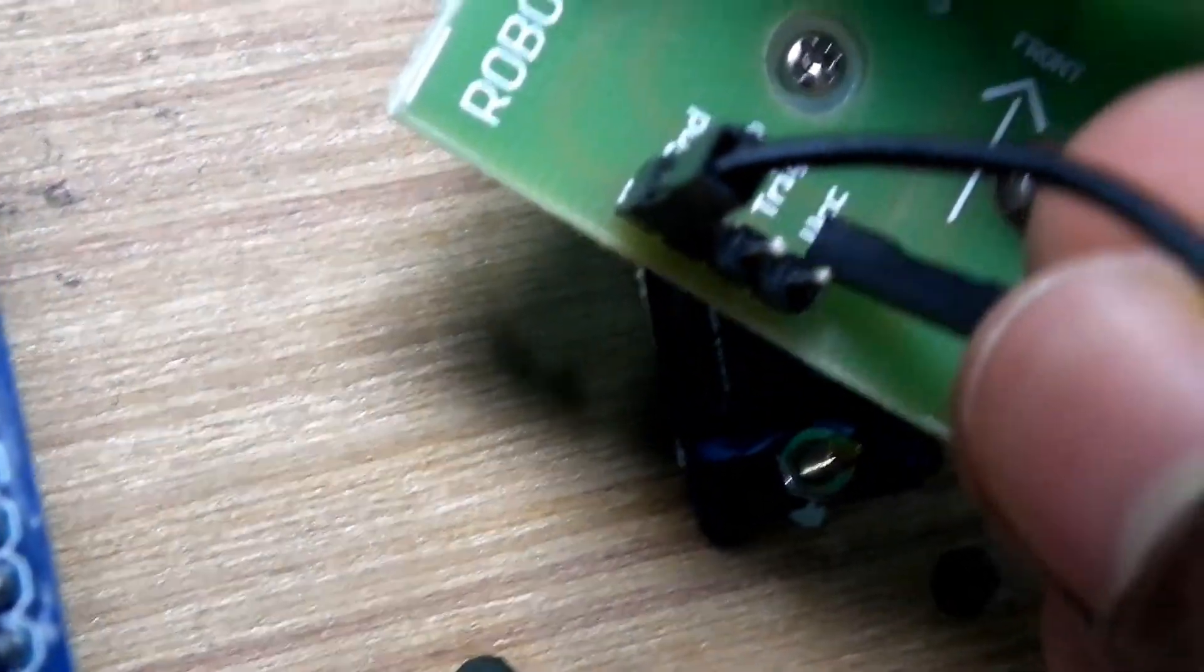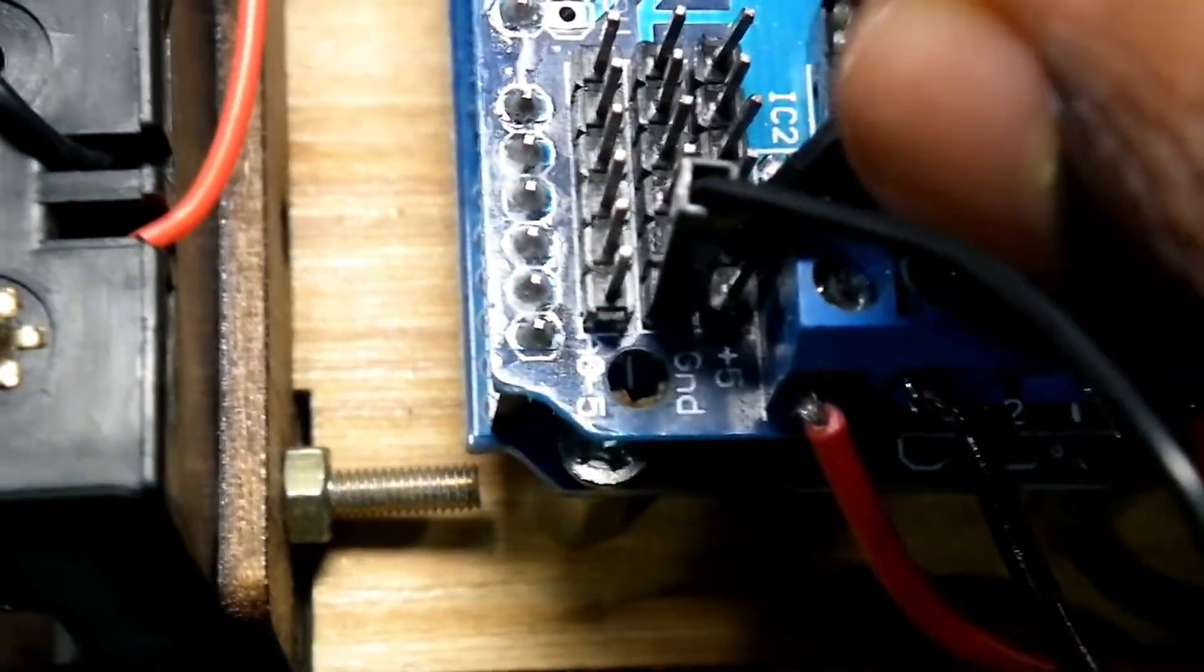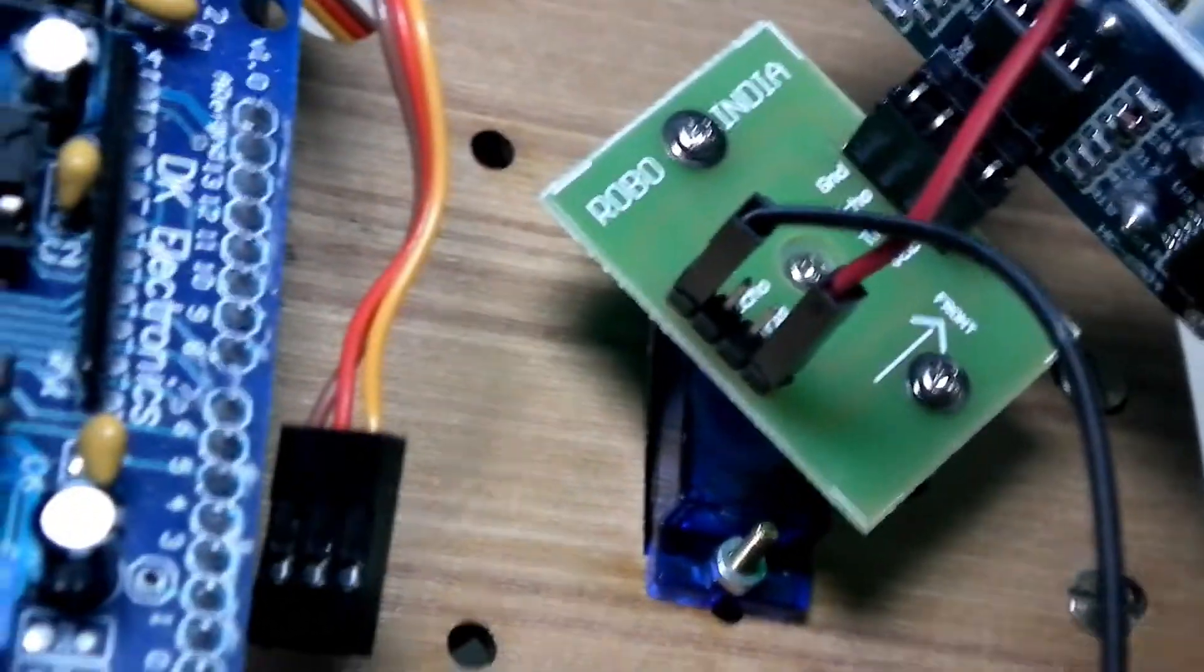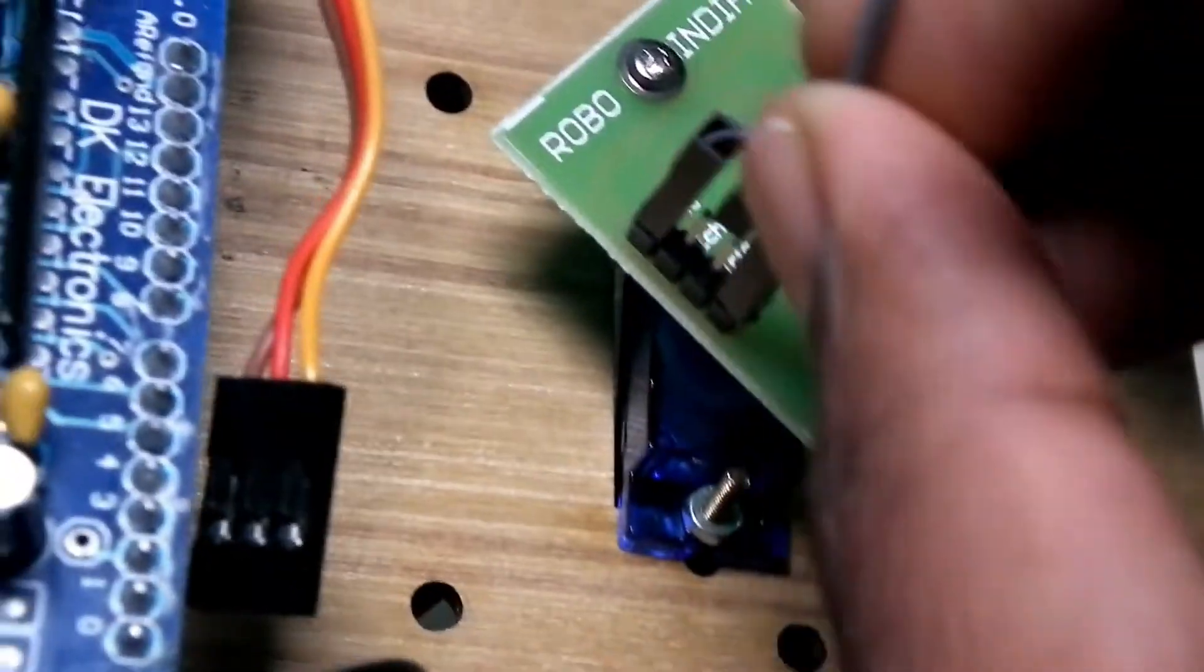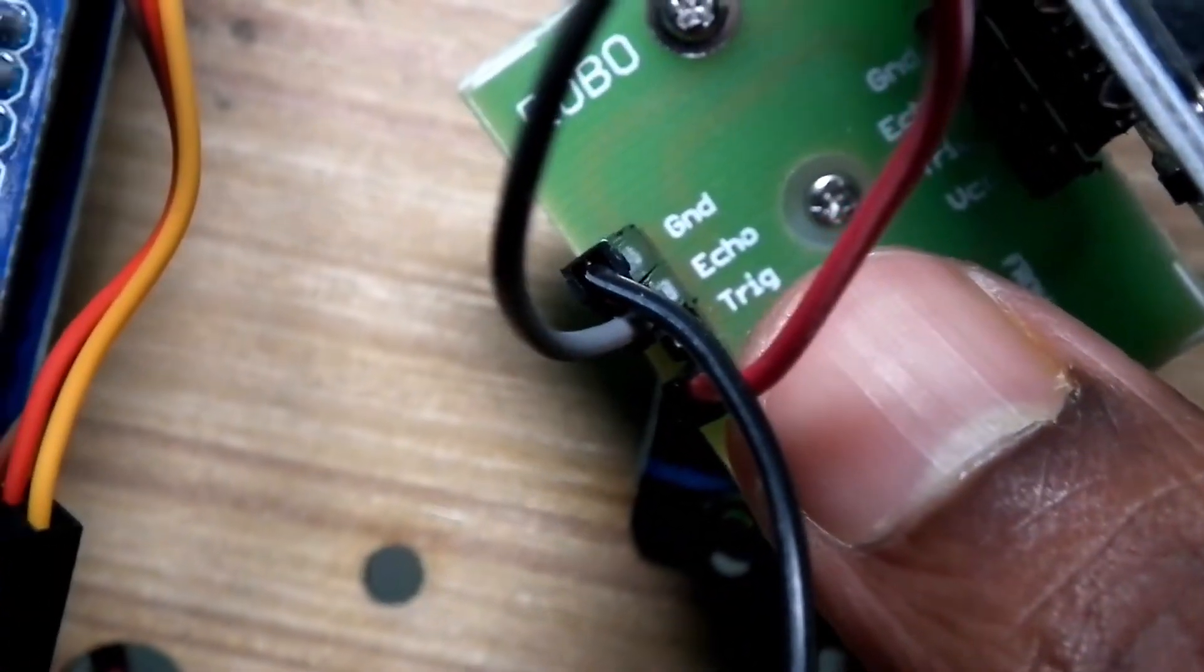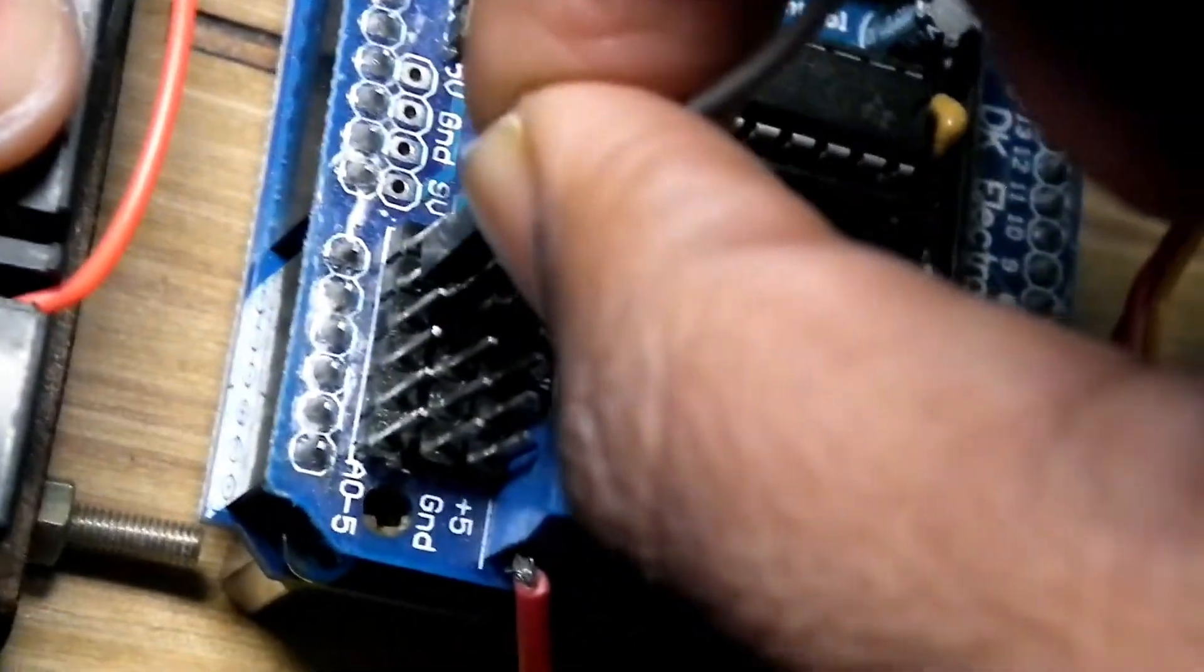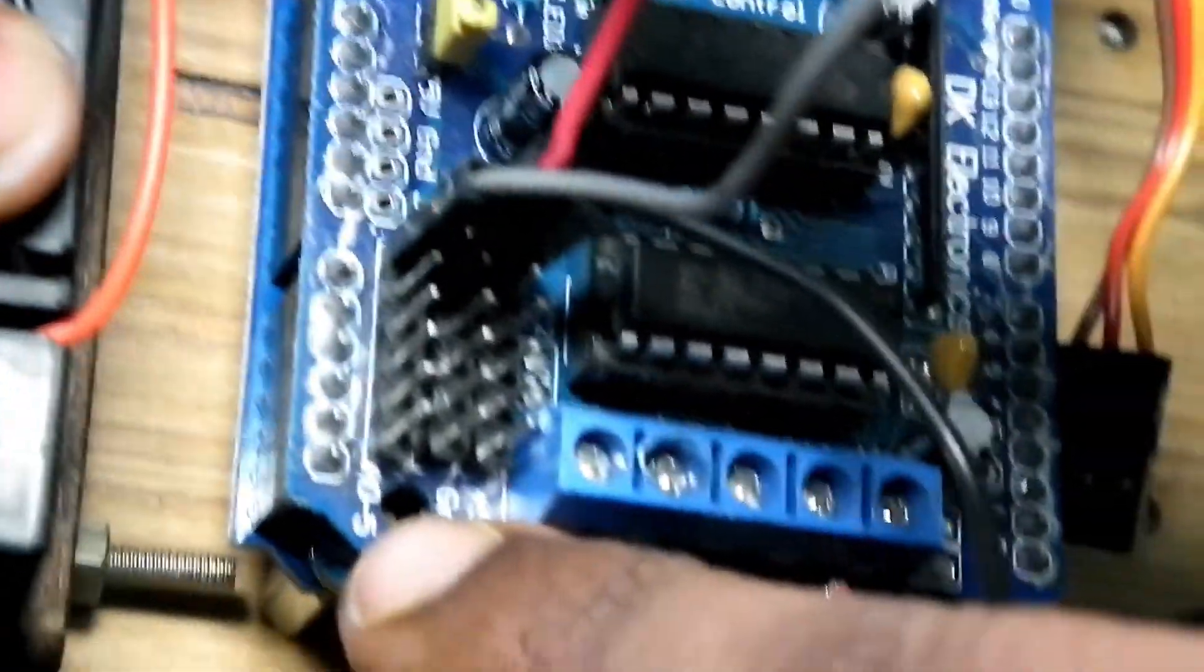Then you have to connect another wire from this VCC to this 5V positive one. Now we will take another wire and connect it from here, which is given as echo, to the terminal over here, A0, so I will connect it over there.